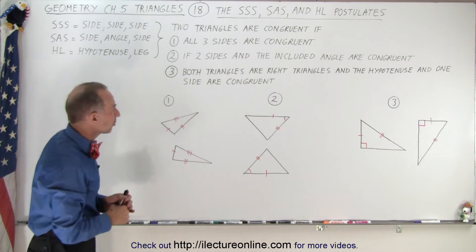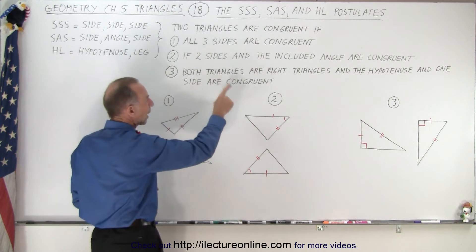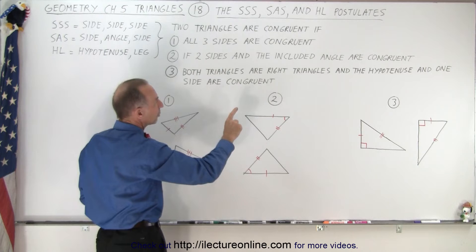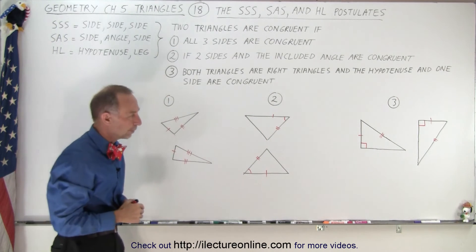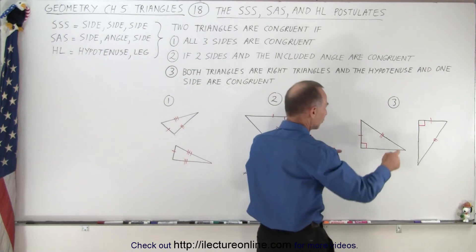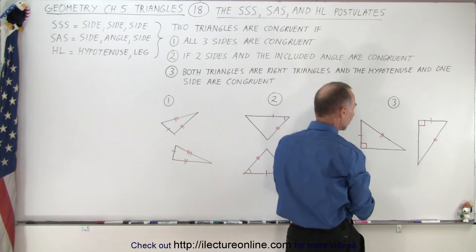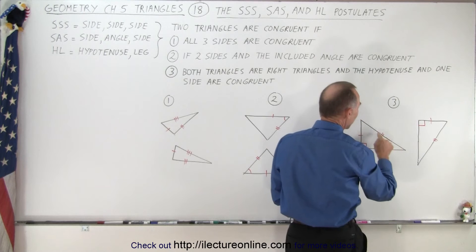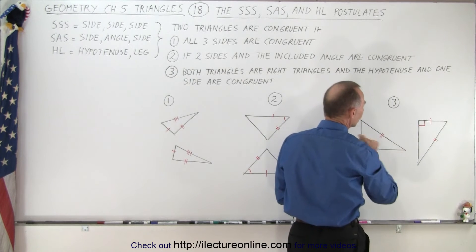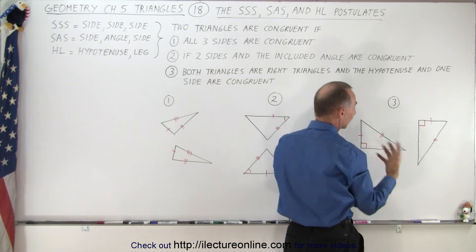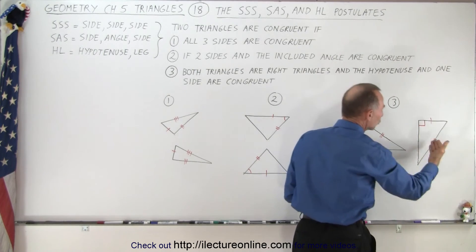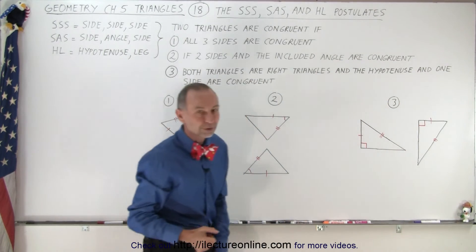And the third postulate states that if both triangles are right triangles, and the hypotenuse and one side are congruent, then of course the triangles are congruent as well. So here we have an example where we have two right angle triangles. We can see that the hypotenuse is congruent, and one of the sides is congruent, and therefore we can conclude that both triangles are congruent.